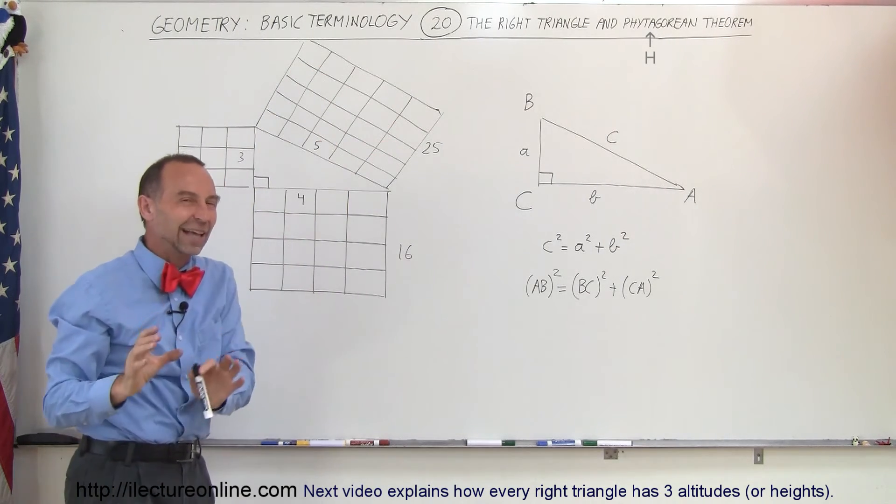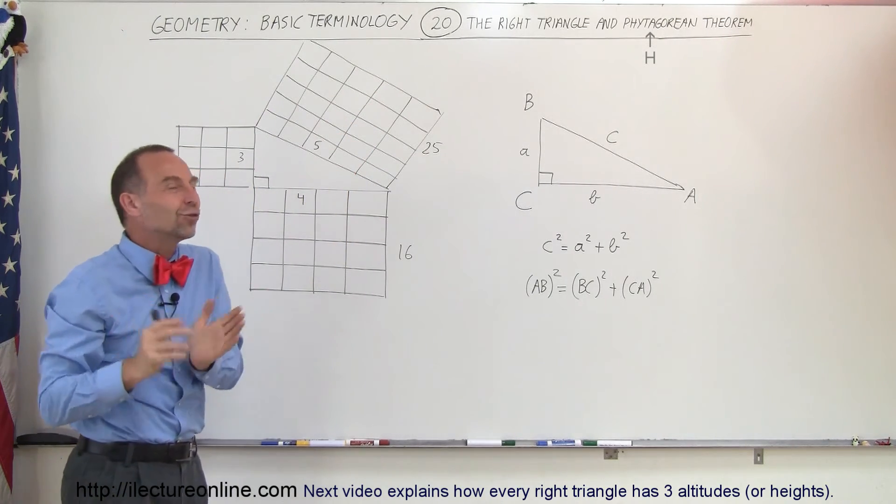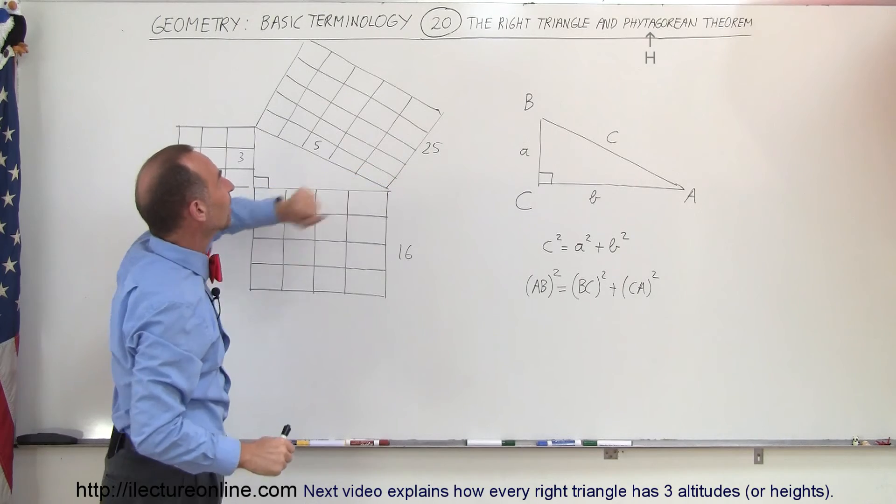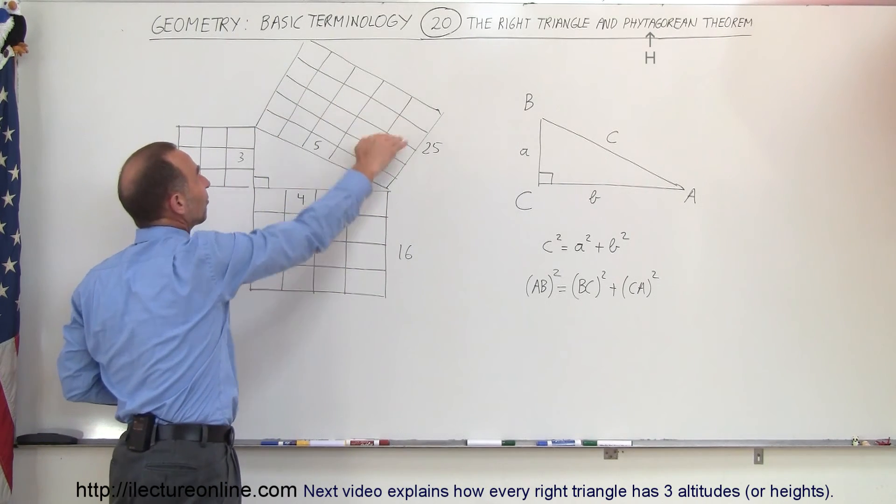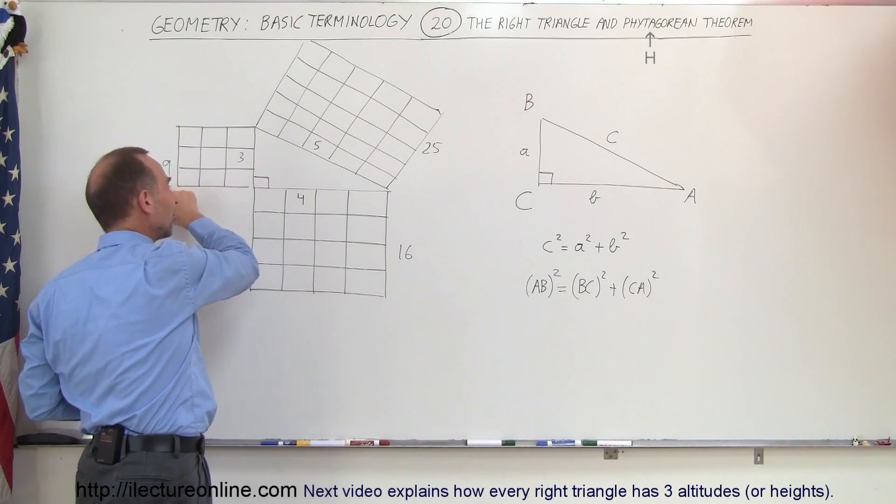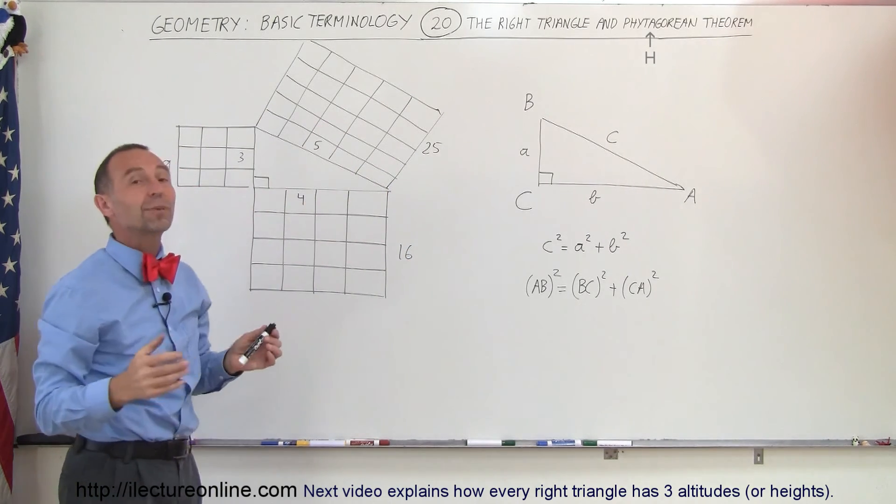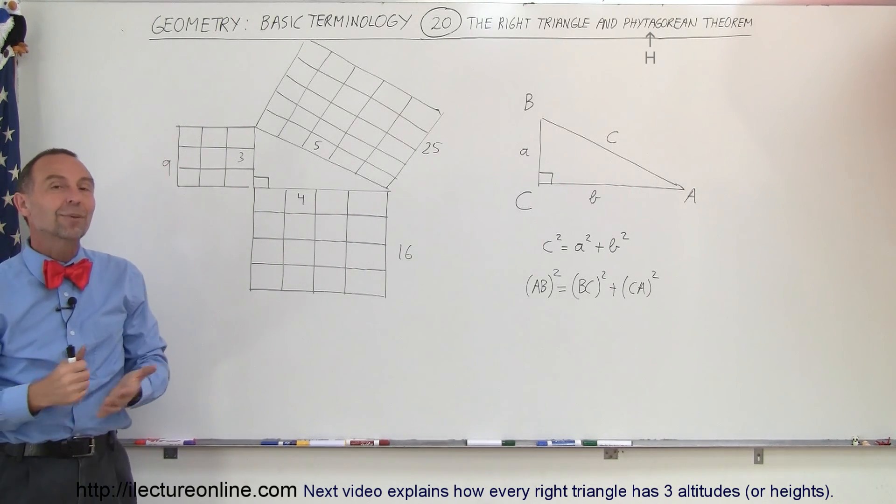Now, I know they don't look exactly like squares, but I ran out of room there, so I just went ahead and squished them a little bit. So just use your imagination and imagine these to be little squares. If we then add up all the little squares, we have 25 of them here, which must equal the 16 squares here plus the 9 squares there. So that's a nice graphical way of showing the Pythagorean theorem, and that's what we mean with right triangles and the Pythagorean theorem.